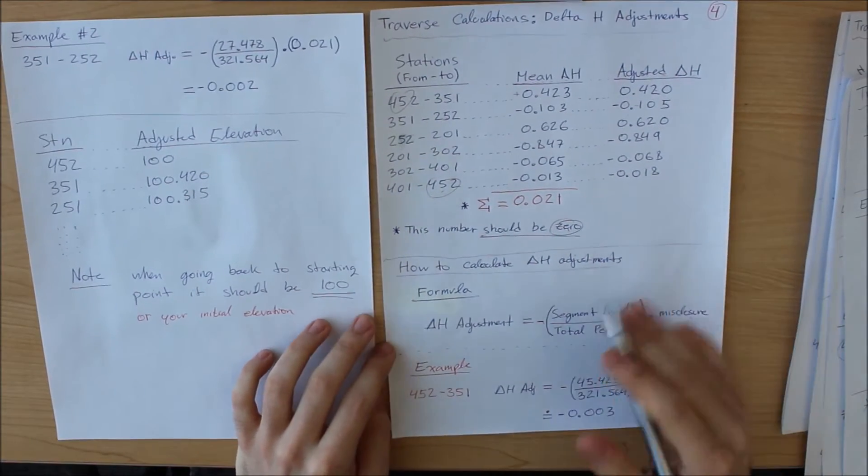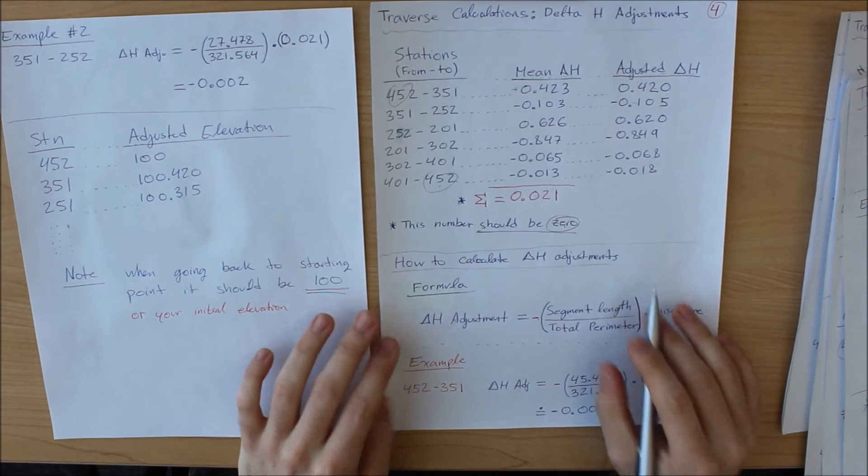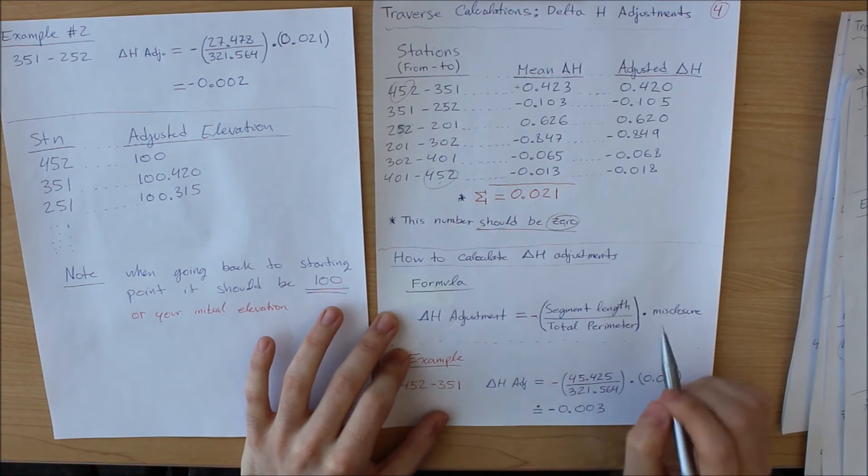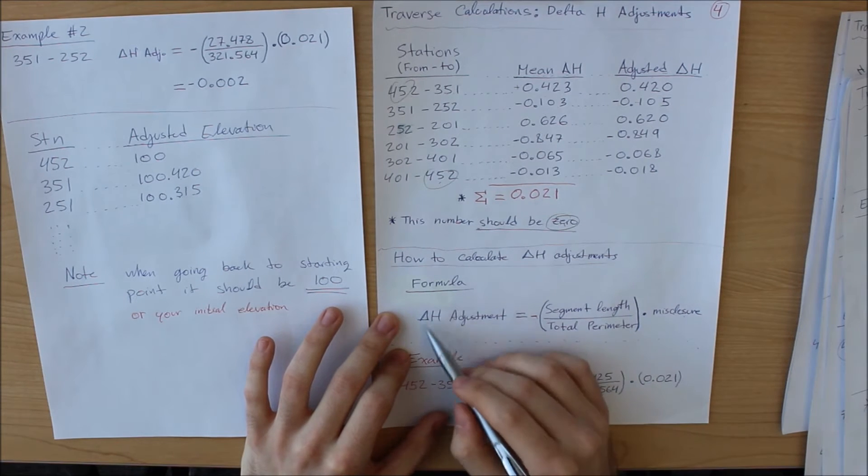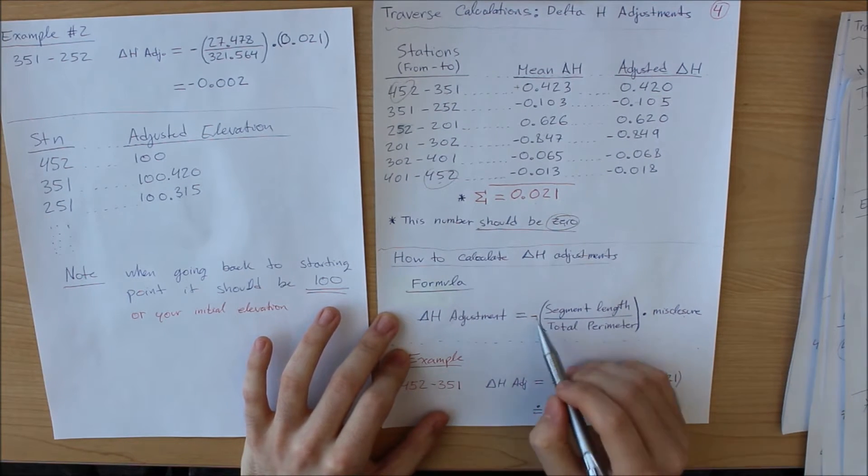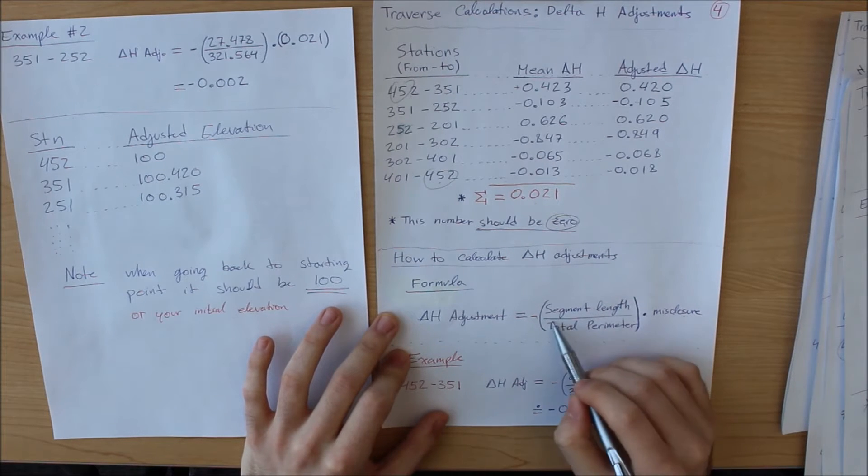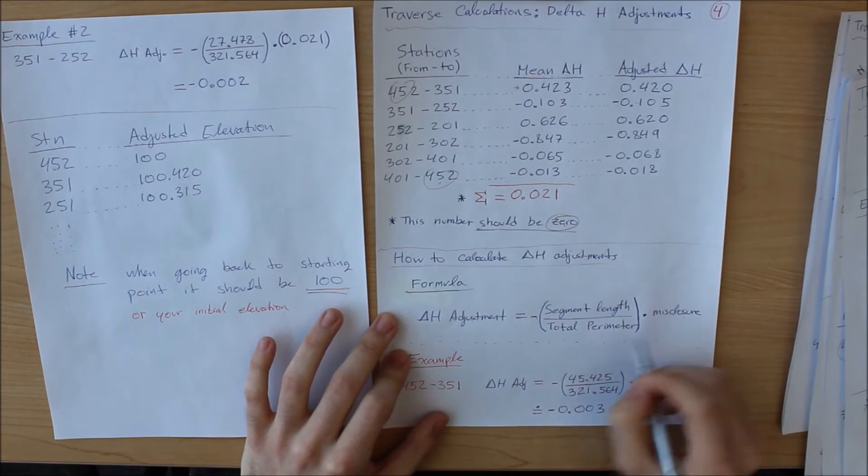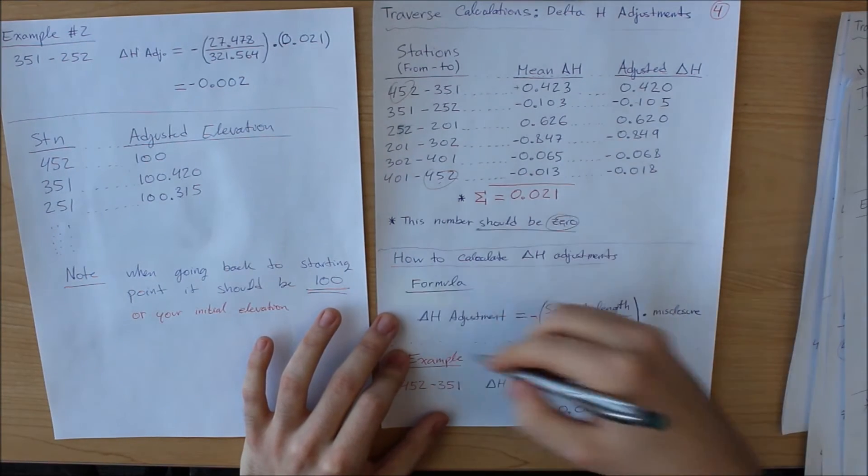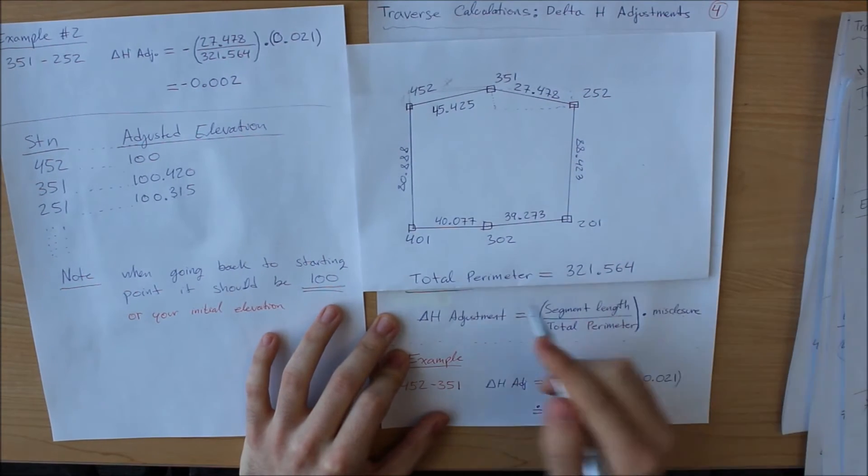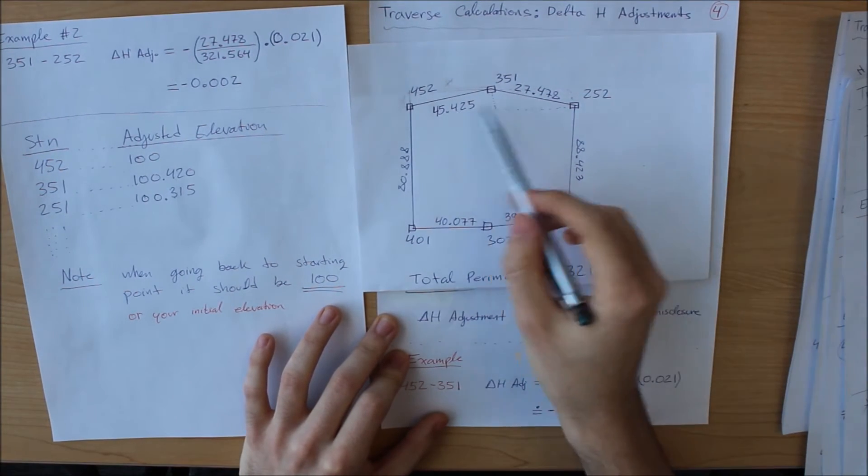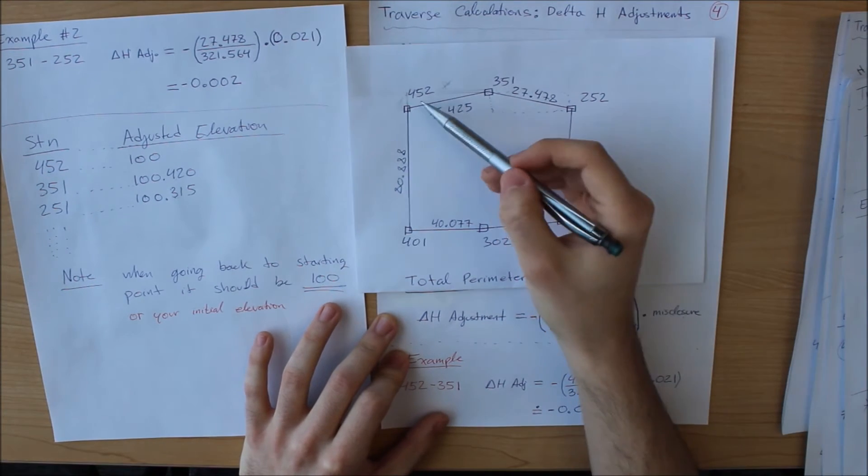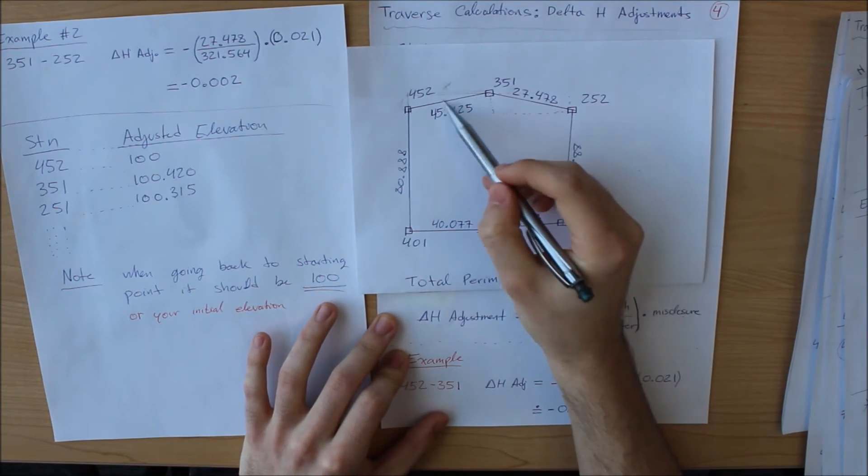So I'm going to show you how to do that, but before I do, this is the formula I am going to use. The adjustment is equivalent to the negative segment length divided by the total perimeter multiplied by the misclosure. The total perimeter is the overall length around your traverse. So that is each of these added up, and that is your total perimeter. In this case, we're working from this point to this point, so we're going to use this segment length.